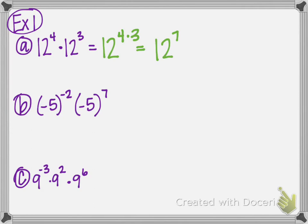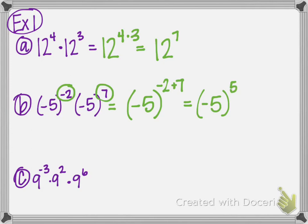Let's do something a little more difficult — we're going to throw some negatives in there. Keep the base the same; I don't care if it's negative. So keep the base negative five and add the exponents: negative two plus seven. Negative two plus seven is five, so it's negative five to the fifth power.